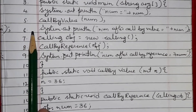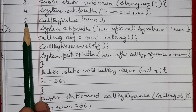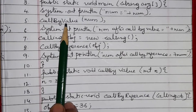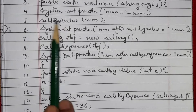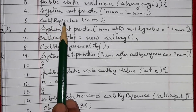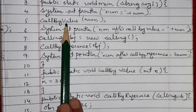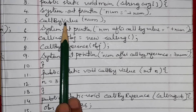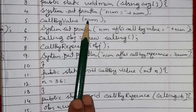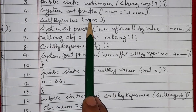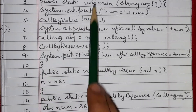Next, at line number 5, we have called a function named 'callByValue'. You can give any name — I have written 'callByValue' to make it easier to understand. We are calling the function and passing 'num' into it.